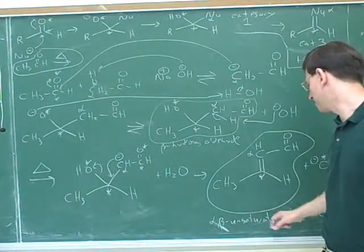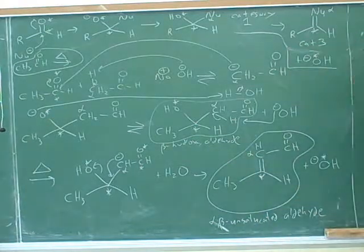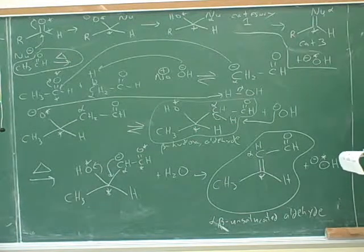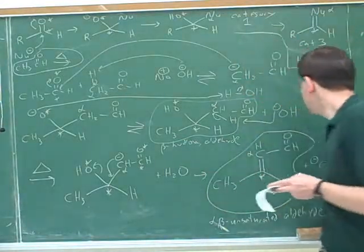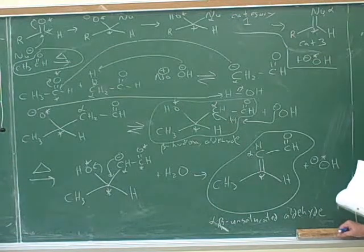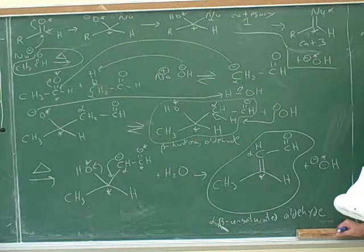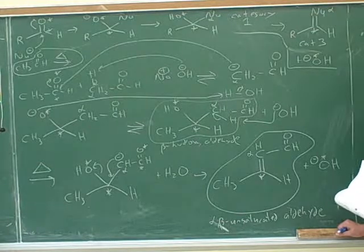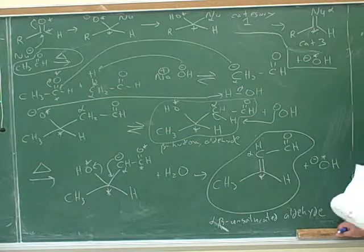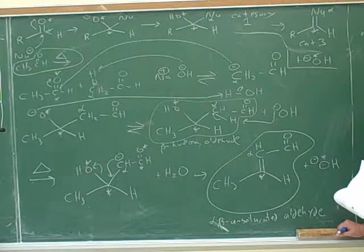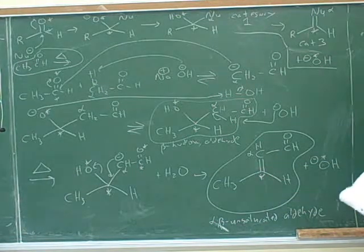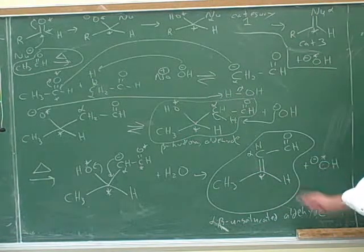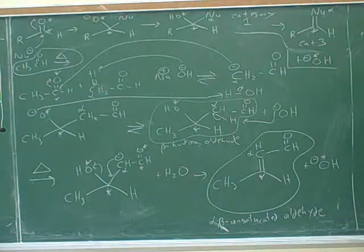This could also work for ketones. Then we would get an alpha-beta unsaturated ketone, or a beta-hydroxy ketone. Incidentally, in another series of videos I said this reaction only works under base catalysis, but your instructors said you could also do this less commonly under acid catalysis. The products would be exactly the same — except that you'd get water instead of hydroxide at that step. The catalyst only affects the mechanism; it doesn't affect what the product is.